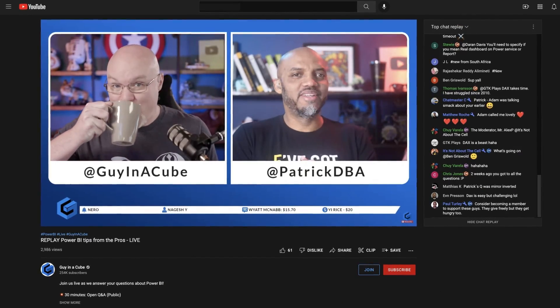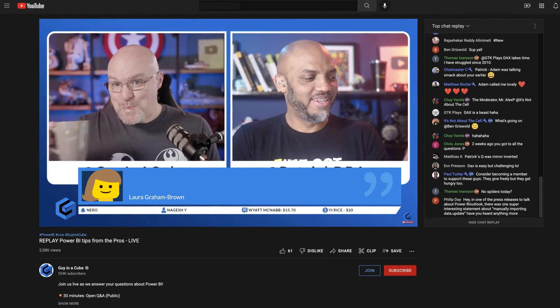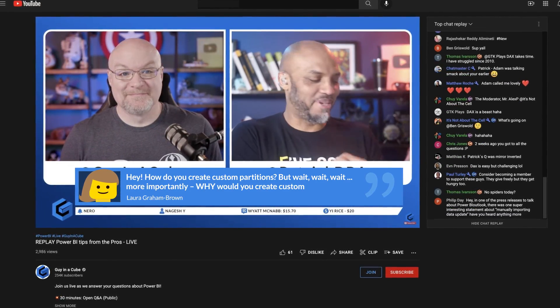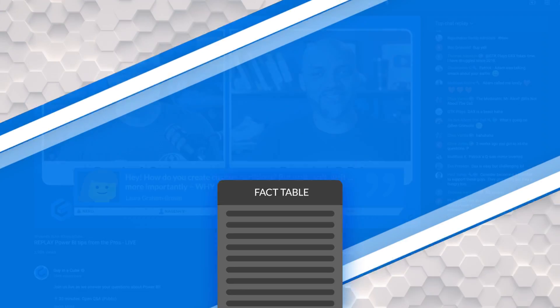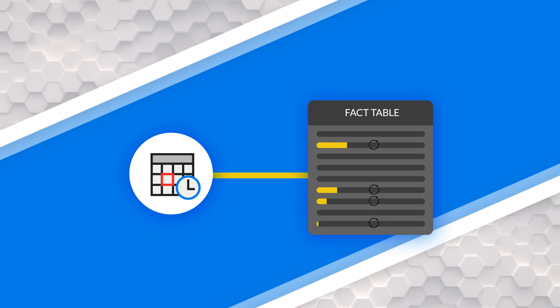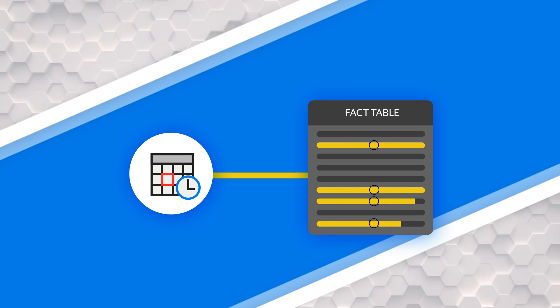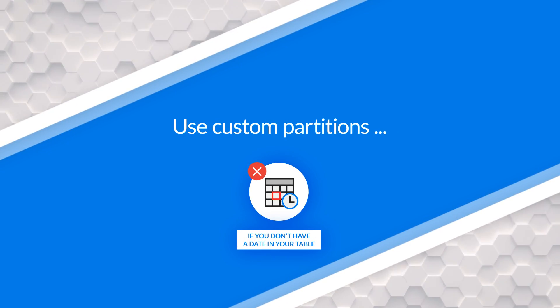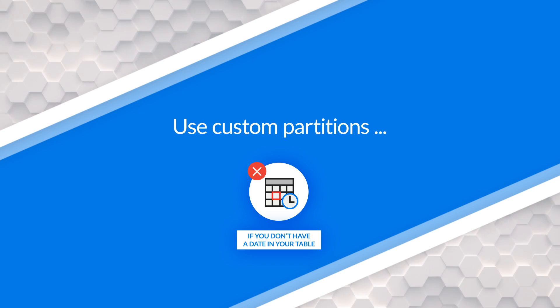Custom partitions. We were recently doing a live stream and Laura Graham Brown asked us how do you create custom partitions? More importantly, why would you create custom partitions? There's a couple of reasons. Let's say you have a fact table — that's the table you want to partition up, break it up. If there's a date there, it's probably the most common way you would partition your table. You can use incremental refresh and it will create those partitions — daily, monthly, quarterly, yearly — based on your incremental refresh policy. But what if you don't have a date and you still want to create some partitions? Then you can actually create those custom partitions. That's one reason.